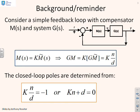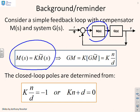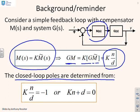Some background, or reminder. We assume that the compensator block M can be written as K times M-tilde. More importantly, if we look at GM, we can write it as K times G-M-tilde, and reduce this to the form K·N over D — extracting the gain K and putting all the dynamics in N over D, which combines the dynamics of the compensator and the system. The closed-loop poles are then determined from either K·N/D = −1, or K·N + D = 0.